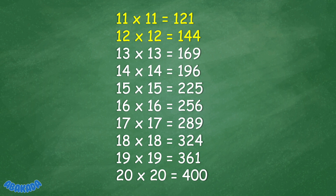13 times 13 equals 169. 14 times 14 equals 196. 15 times 15 equals 225. 16 times 16 equals 256. 17 times 17 equals 289.